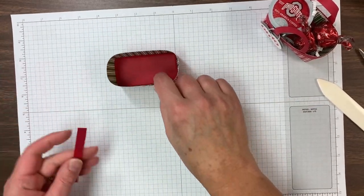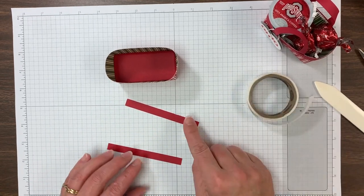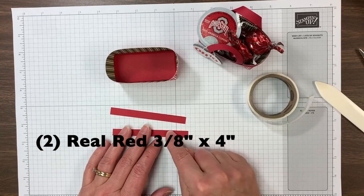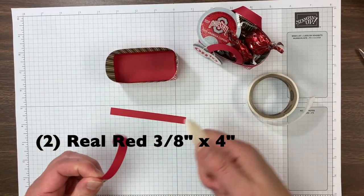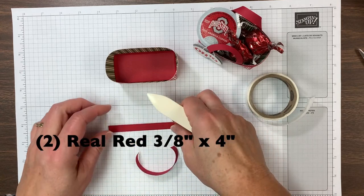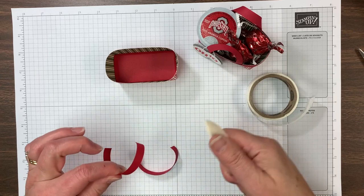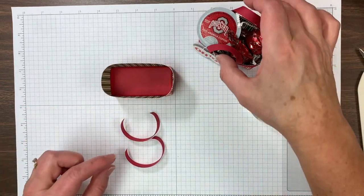So then I've got my handle strips, which are three eighths inch by four inch strips. You need two. And I'm taking my bone folder and breaking down the fibers a little bit to make them a little more pliable so that they can curve.